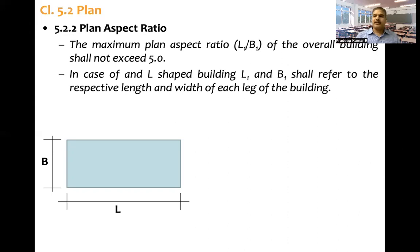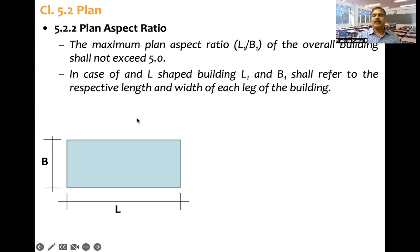In case of L-shaped building, L1, B1 shall refer to respective lengths and width of each leg of the building. This is one leg, this is another leg. L1 by B1 should be less than 5, and in this direction also L2 by B2 should be less than 5.